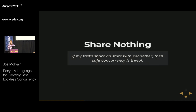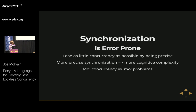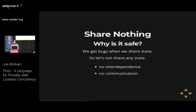Share nothing: if my tasks share no state with each other, then safe concurrency is trivial. The concurrency bugs we highlighted were all related to the interdependence of concurrent tasks. We get problems when we share state between tasks, so one trivial remedy is to avoid shared state altogether. When you can pull it off, it works beautifully — it scales perfectly because there's no relationship between the tasks at all, so there's no possibility of a bottleneck as you scale. If concurrent tasks are truly independent, every possible order of events is correct behavior.